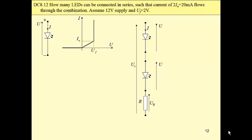We have a typical engineering problem here. How many LEDs can be connected in series such that current of 20 milliamps flows through the combination? And we have to assume 12 volt supply and voltage of 2 volt, the characteristic voltage for each diode.